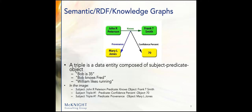In a semantic graph, what we do is create additional triples, where the subject of those additional triples is the relationship itself. So here are a few basic triple stores: Bob is 35. Bob knows Fred. William likes running. And so on. Those are your records in a semantic or RDF or knowledge graph. In the image, you have the subject John R. Peterson, the predicate 'knows,' and the object Frank T. Smith. The subject of the second triple is the first triple itself — so the predicate is 'confidence percent' and the object is 70.